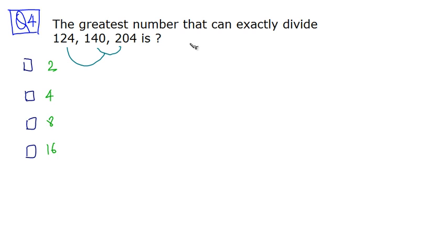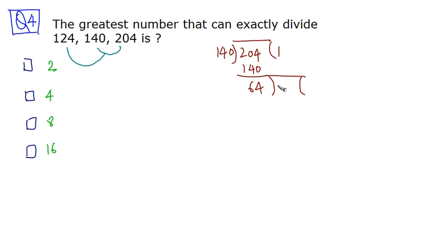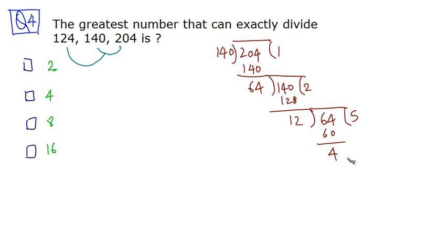Let's do this by the division method. We divide 204 by 140: 140 times 1 is 140, remainder 64. Then divide 140 by 64: 64 times 2 is 128, remainder 12. Then divide 64 by 12: 12 times 5 is 60, remainder 4. Finally divide 12 by 4: 4 times 3 is 12, remainder 0. So 4 is the HCF of 204 and 140.